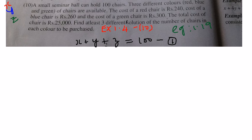The next statement reads, cost of the red chair is 240 bucks, cost of the blue chair is 260 bucks, and cost of green chair is 300 bucks. If I have to write this into an equation, the cost of one red chair is 240 rupees. Therefore, the cost of x red chairs will be 240 into x. Similarly, the cost of y blue chairs will be 260 into y. Similarly, the cost of z green chairs is 300 into z. Now, if I buy so many such chairs with this cost, what will be the total cost? It is 25,000.